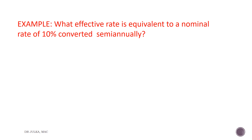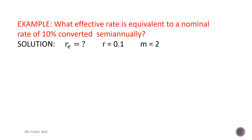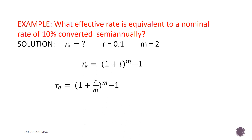One more example on effective rate of interest. Here we want to calculate the effective rate of interest equivalent to a nominal rate of 10% converted semi-annually. Re is unknown. The rate of interest R is given as 10%, implying 0.1, and m equals 2 because interest is compounded semi-annually. We apply the formula: Re equals 1 plus i, whole raised to the power m, minus 1, where i is R divided by m.